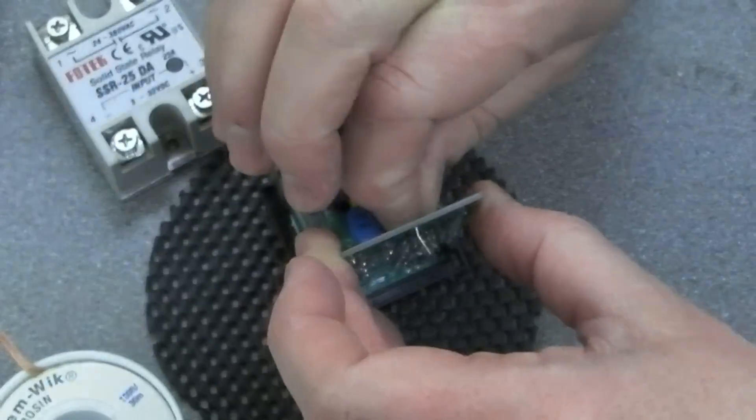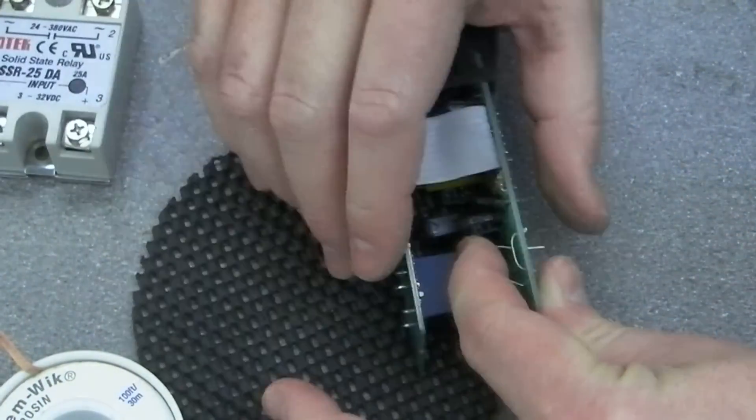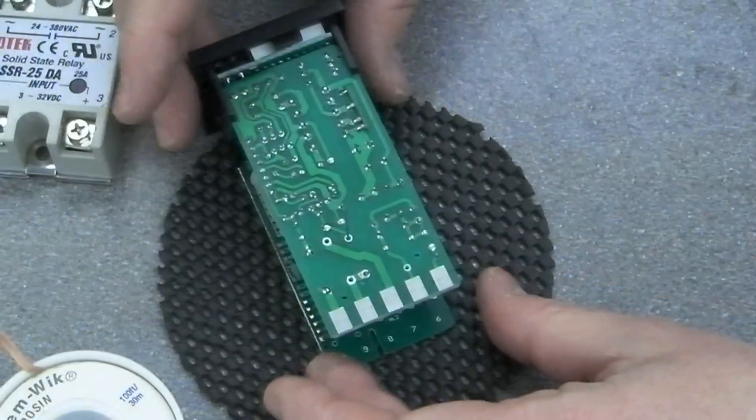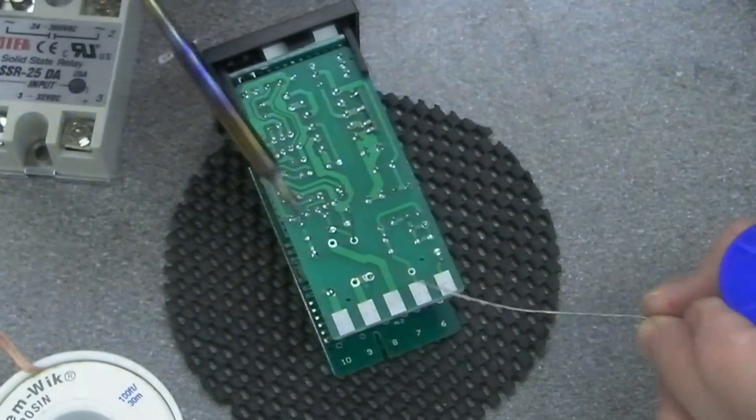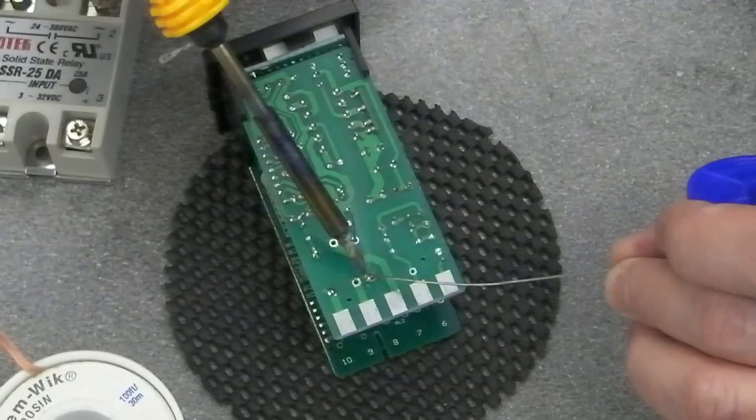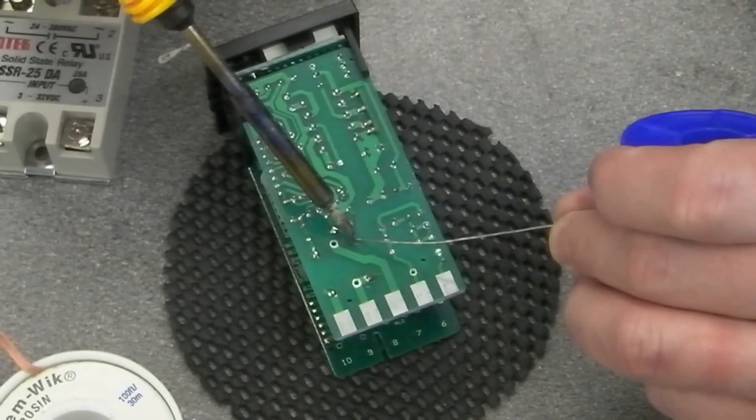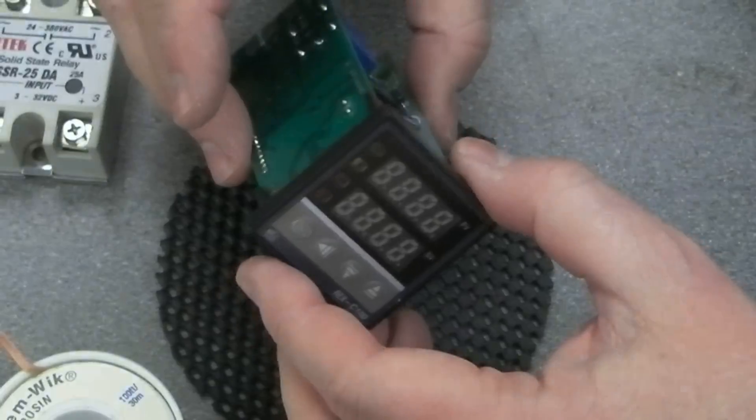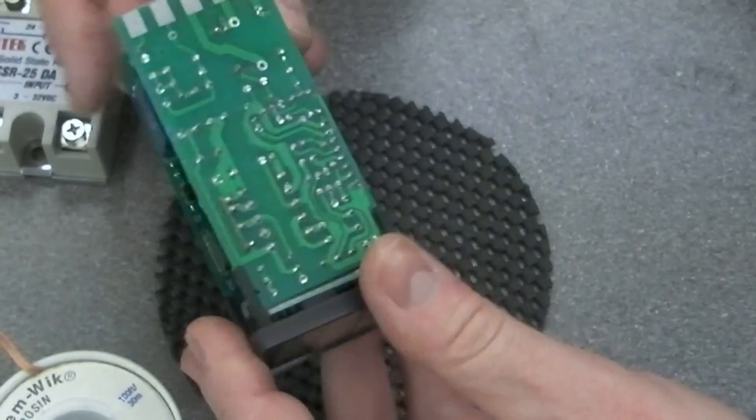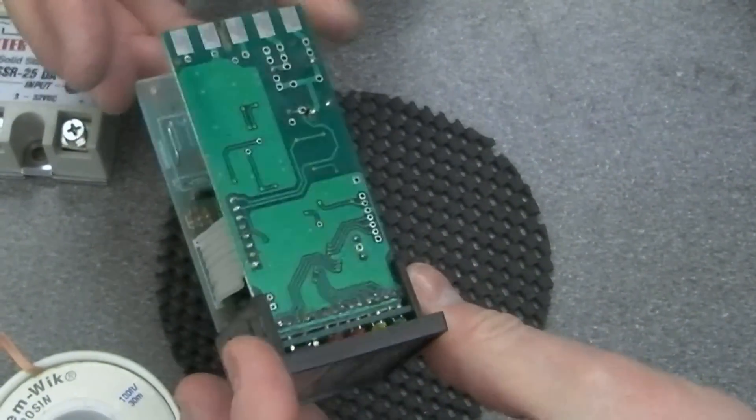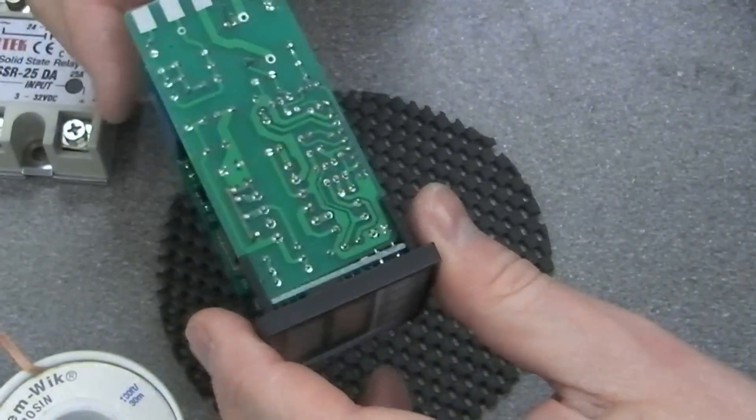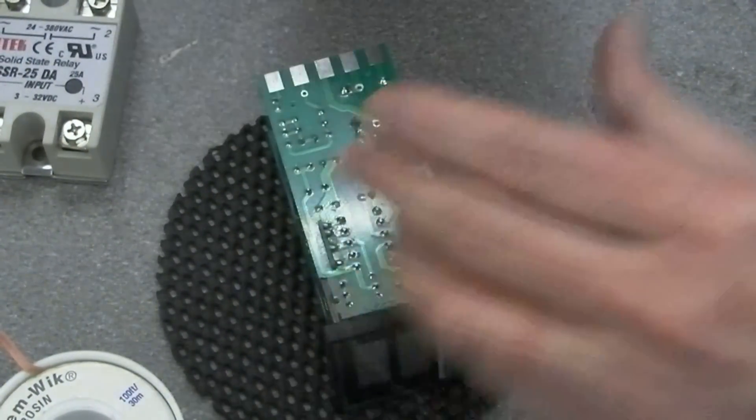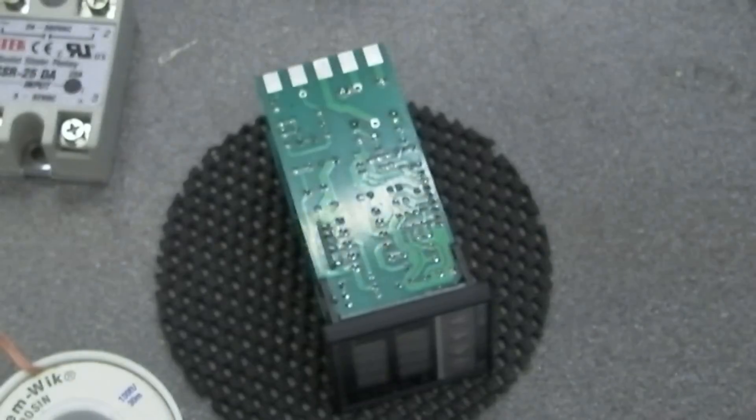There is another version of this relay that has the solid state relay output rather than this mains switching relay. I couldn't find one anywhere so I suspect it's not readily available. Now I don't know whether this is a cheap Chinese copy of another PID or whether this is the genuine article. So when you order one of these, do check the connections very carefully. I can't guarantee that what you get is going to be exactly the same internally as mine is.